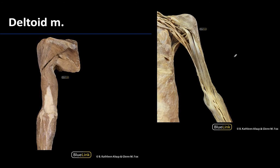In the shoulder region the most superficial and largest muscle is the deltoid muscle, which I think of as a cap on the shoulder. This is a very coarsely fibered muscle and is a very dominant structure in both an anterior and a posterior view — both of these are the deltoid muscle.